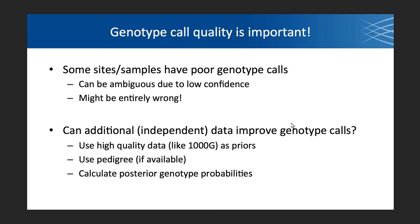Genotype calls could be low confidence where there weren't many reads, or base qualities on reads weren't great — it might be homozygous variant but there was one dubious reference read. In some cases they can be entirely wrong. There's sampling error too: you sequence some number of reads at each position, and by chance you might get all reads from the same haplotype without sampling any reads from the other haplotype. The idea is to use additional data independent from the BAM sequencing data to improve our genotype calls.